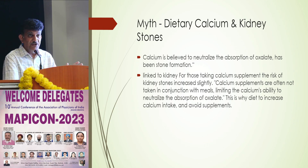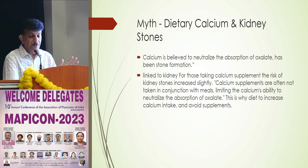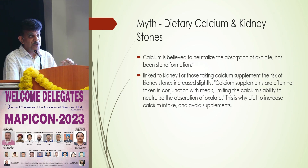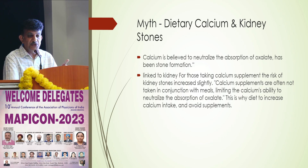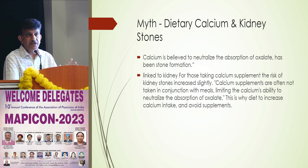Regarding dietary calcium — calcium is believed to neutralize the absorption of oxalate, thereby reducing stone formation. Have adequate calcium in your diet. For post-menopausal females on high supplemental calcium in tablet form, advise them to take it with meals so that it can reduce the absorption of calcium along with oxalate. Taking calcium alone is not harmful, but supplemental calcium must be taken along with meals.